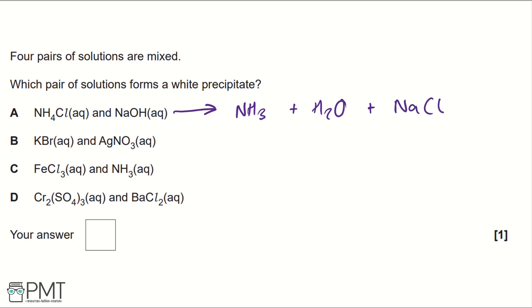If we then write the state symbols, ammonia is a gas, water is a liquid, and sodium chloride would be an aqueous solution. Because in the question we're looking for a white precipitate, and precipitates are solids, our answer cannot be A because neither of our products are solids. So we can eliminate A.